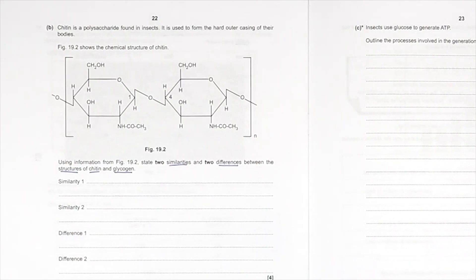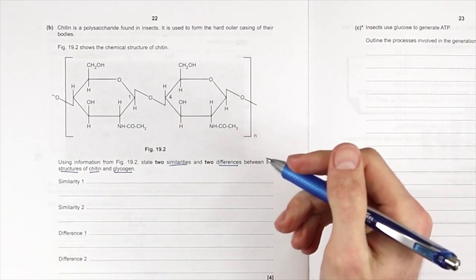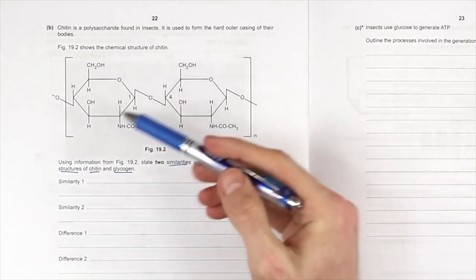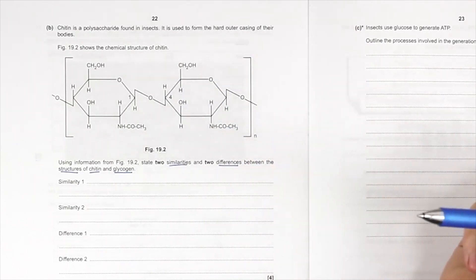You should know the structure of glycogen. It's a polymer of alpha glucose. You should know the structure of alpha glucose, and therefore you can make some similarities and differences here.